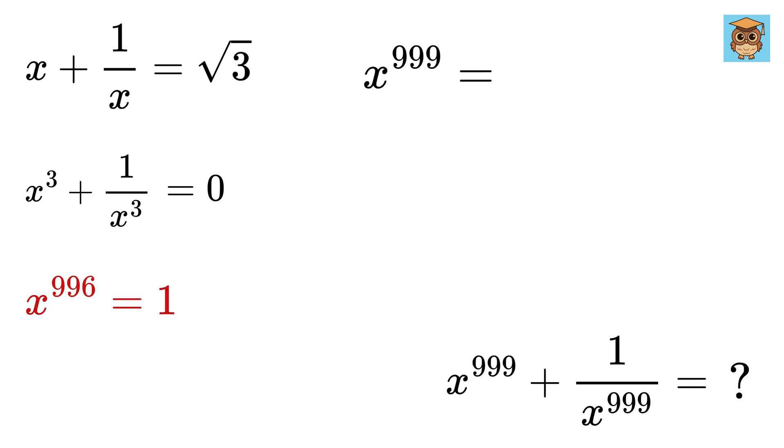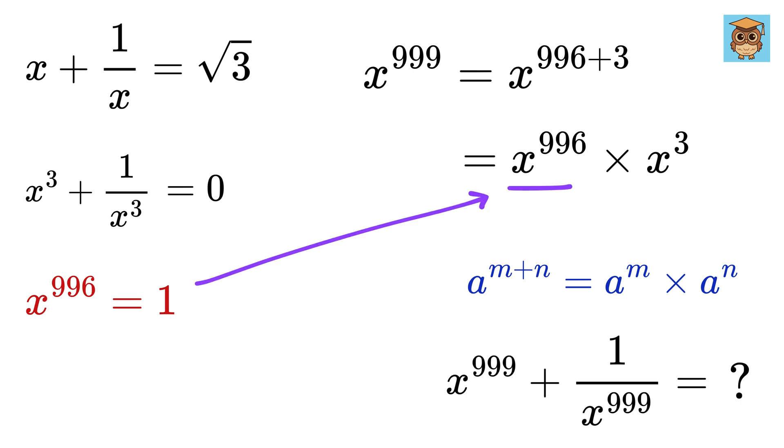Now, x to the 999 can be written as x to the 996 plus 3. And this power rule gives us this as x to the 996 times x cube, and since this is 1, thus x to the 999 equals x cube.